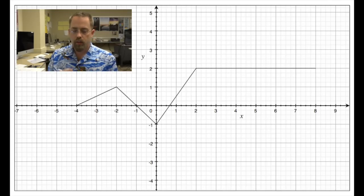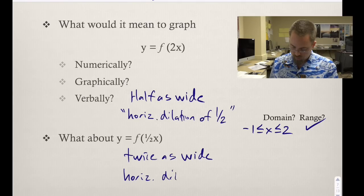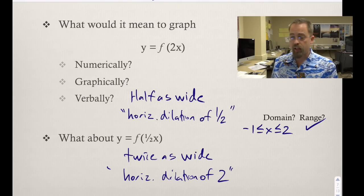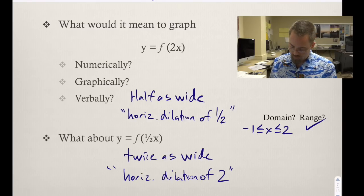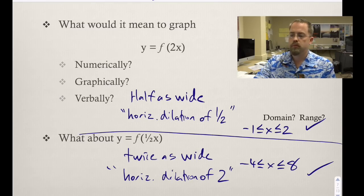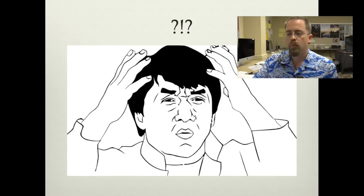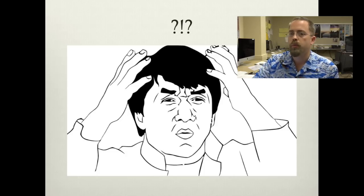Also, what would happen then if we tried to plug in half x into f of x? Similar kind of thing. You can see in the graphic that it's going to be twice as wide, a horizontal dilation of 2. And again, our domain is going to be radically different. The range is unaffected, but the domain is now going to be negative 4 to positive 8. What? What is going on here? This is not what we expected.